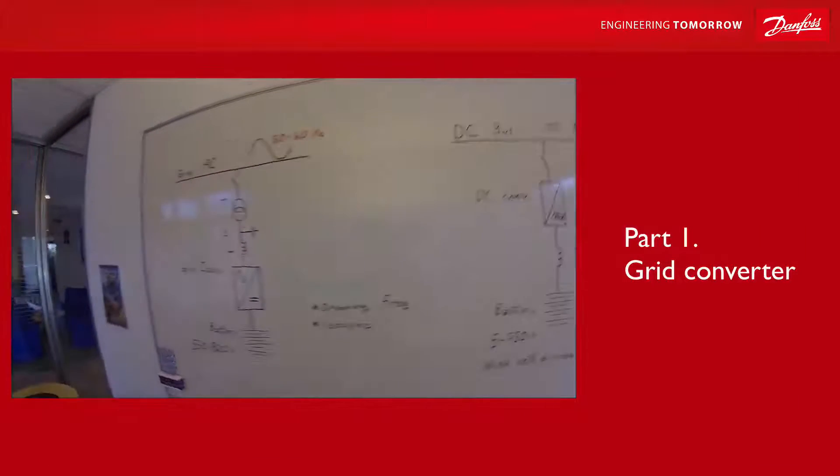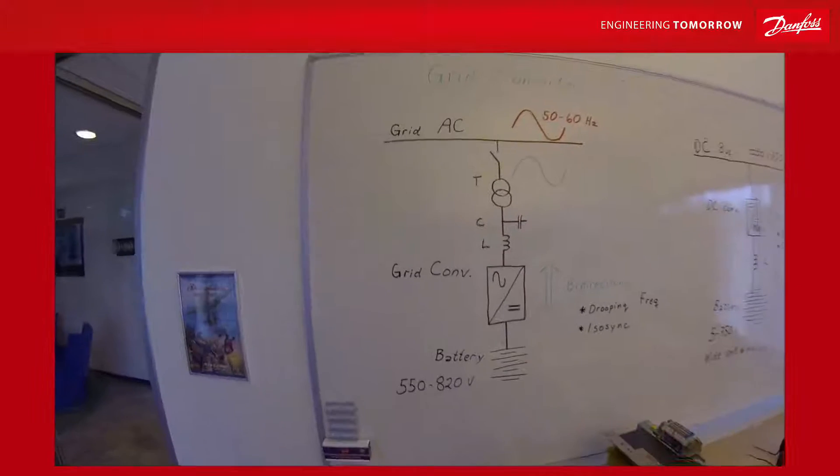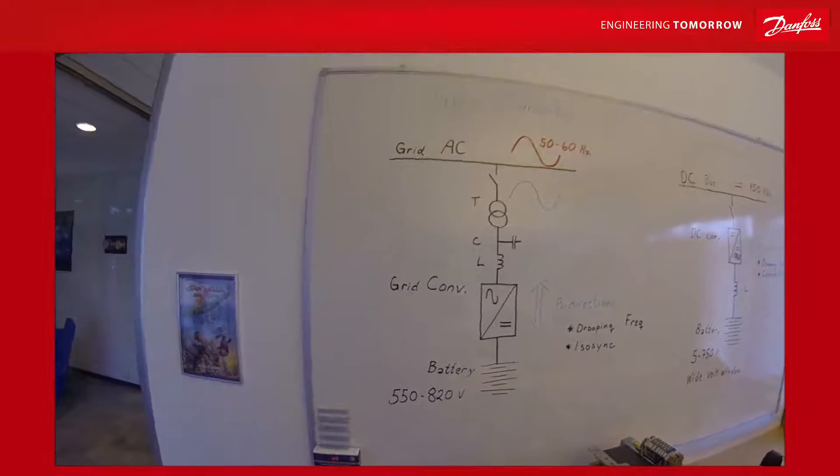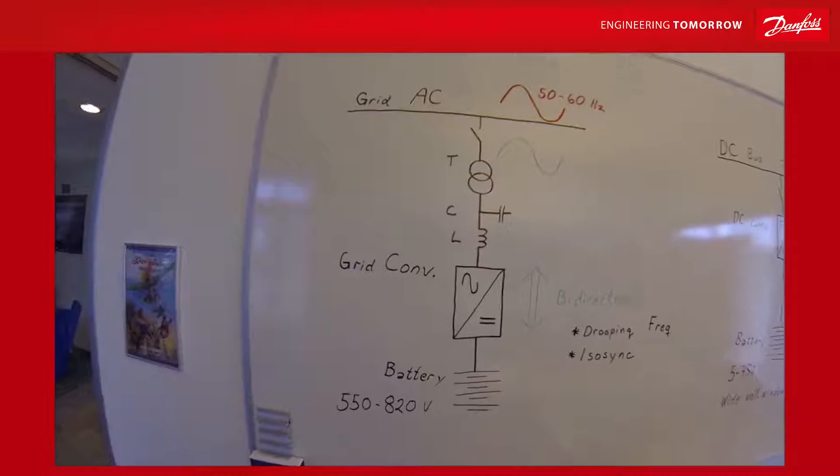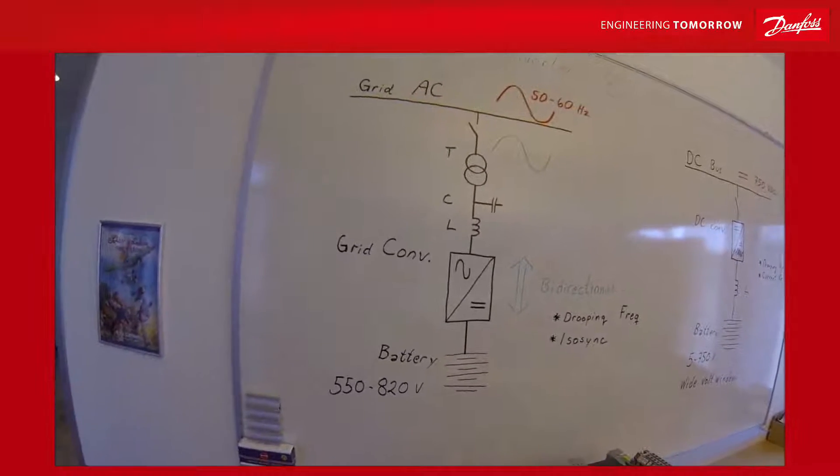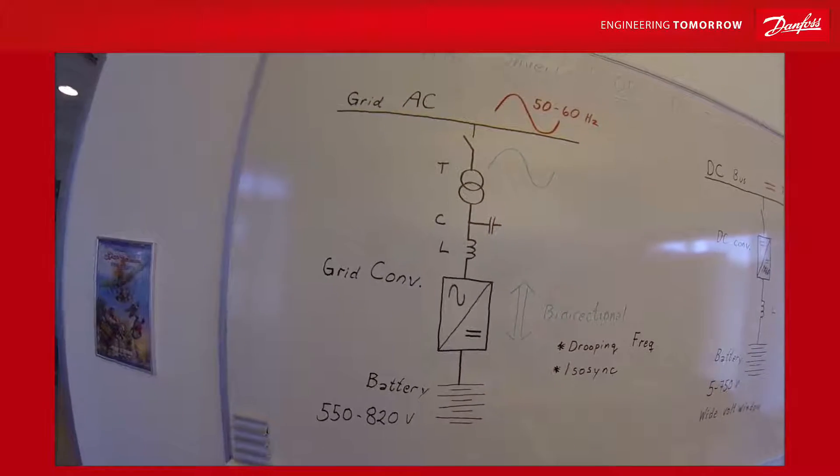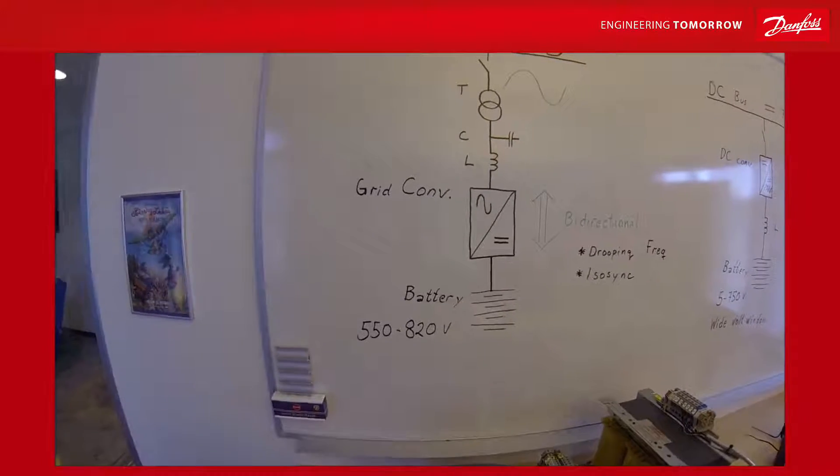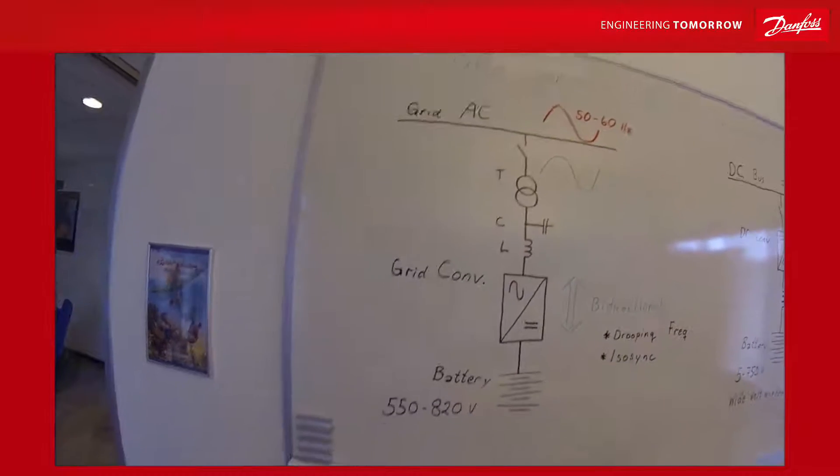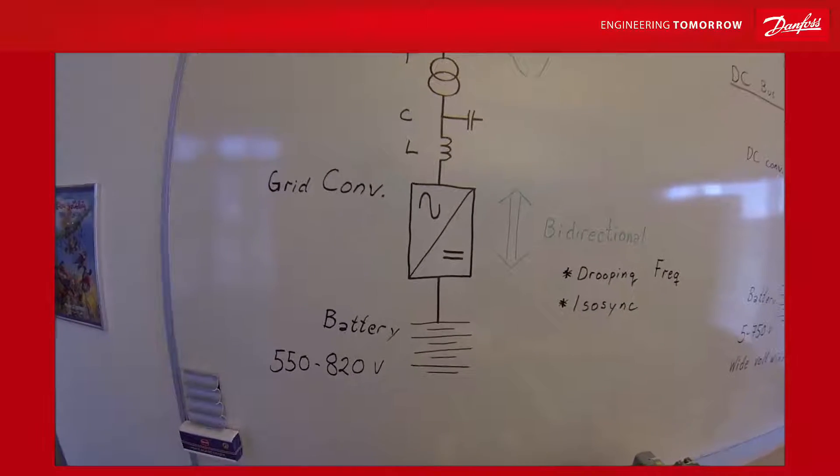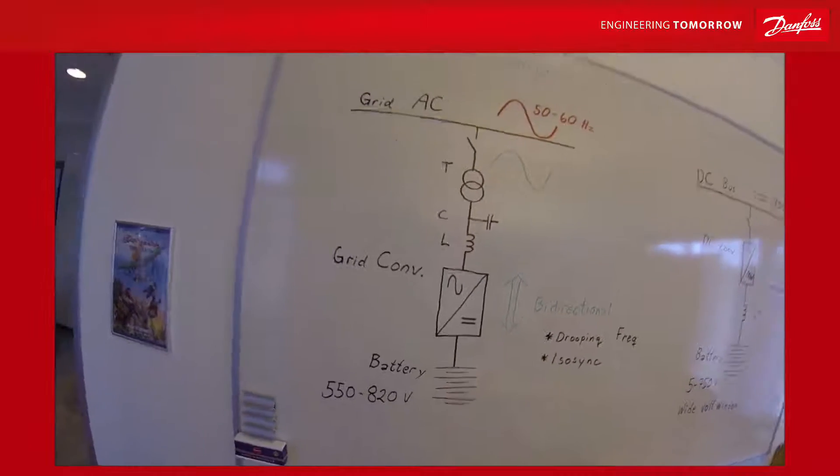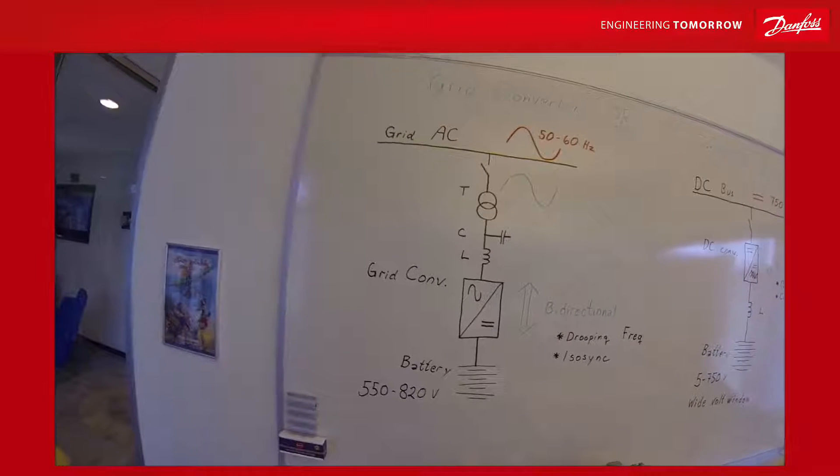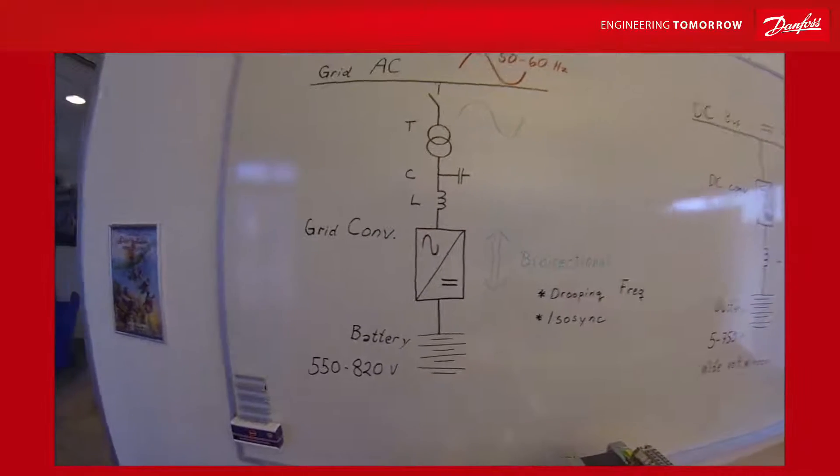First we are going to look at the grid converter which is probably the most versatile of them. It's used for shore connection, peak shaving on boarding ships, between batteries and city grid, and as interruptible power for AC grids. Many uses of this.